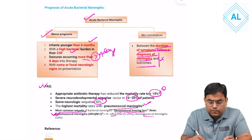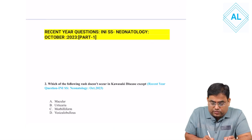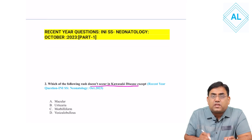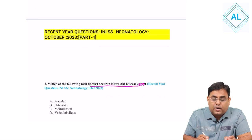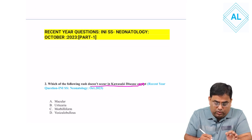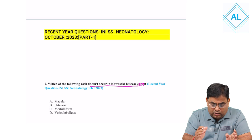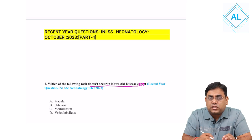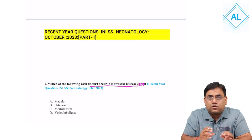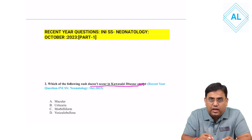Next question: Which of the following rashes does not occur in Kawasaki disease? Option 1: macular. Option 2: articular. Option 3: morbilliform. Option 4: vesiculopustular. There is a dictum — if there is a vesiculopustular lesion or vesicular rash, Kawasaki disease is unlikely.